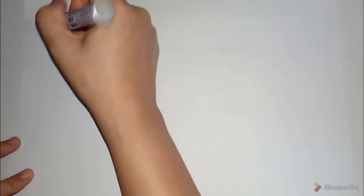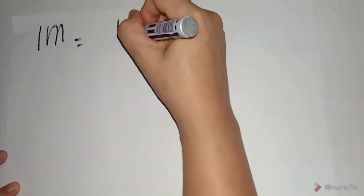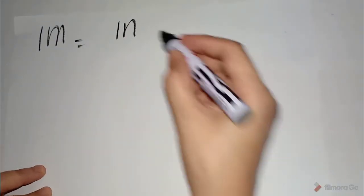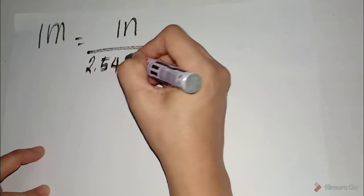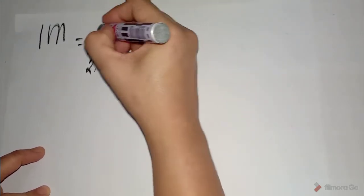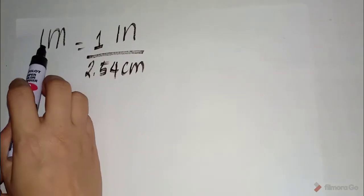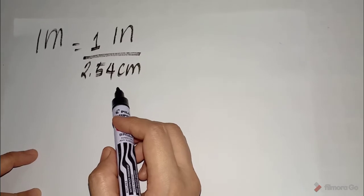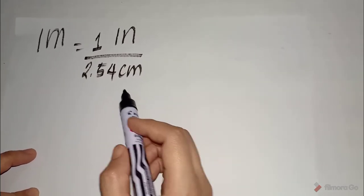Okay, let us try another example. Let us convert 1 meter into inches. Now, the common conversion factor that we know is that 2.54 centimeters is equivalent to 1 inch. Now, the unit of measurement that we have are meter, inches, and centimeters. Now, let us think of another conversion factor that we can use in order to cancel the units.